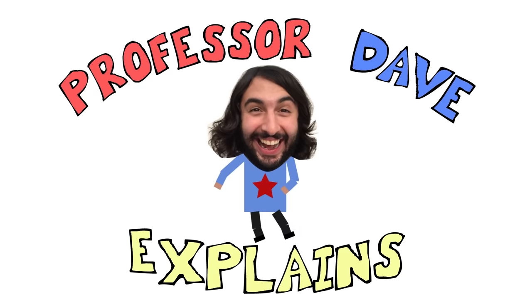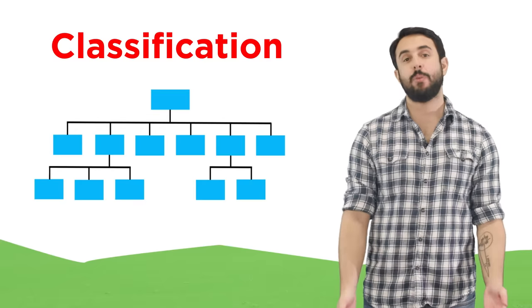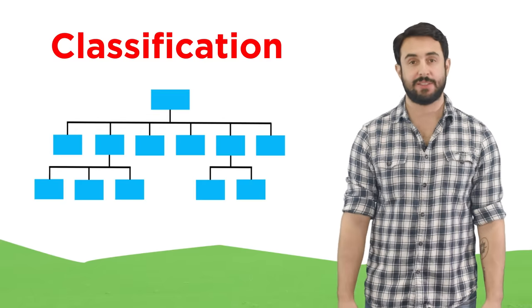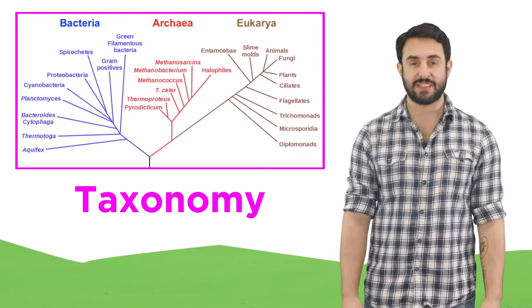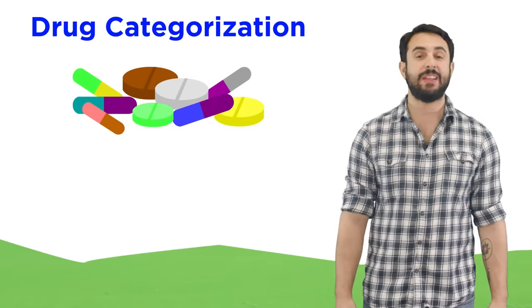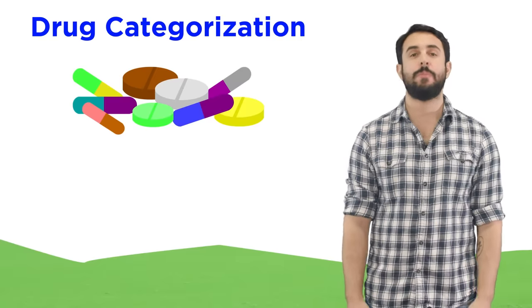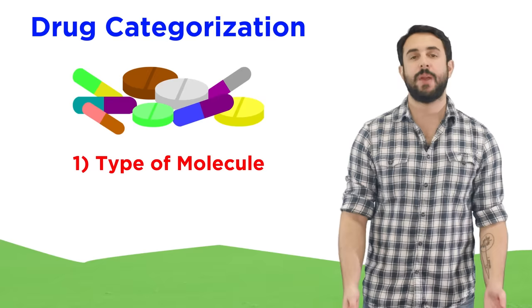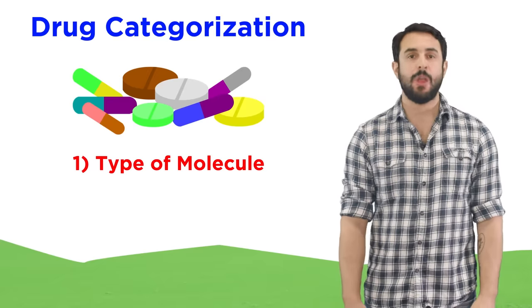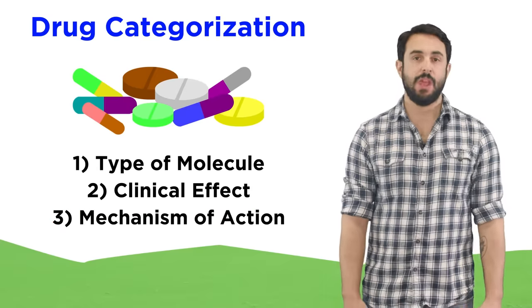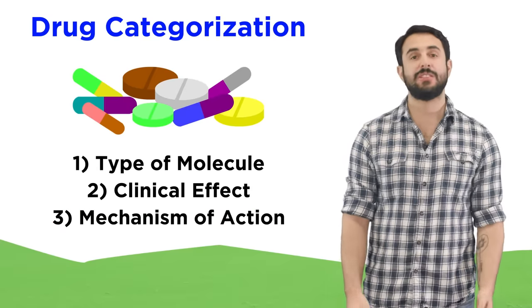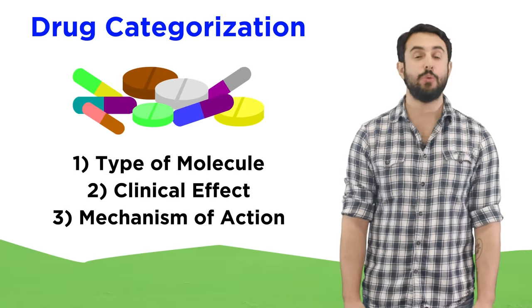Professor Dave here, let's classify some drugs. Whenever we are studying something that comes in so many varieties, we need some way of classifying them, just like the way we use taxonomy to classify living organisms. With drugs, it can be a little complicated, because there are different ways we might wish to categorize them. We might group them according to the type of molecule they are, or by what it does clinically, or by the mechanism of action. These methods all have their own utility, so let's talk a bit about them now, as well as a few related topics.